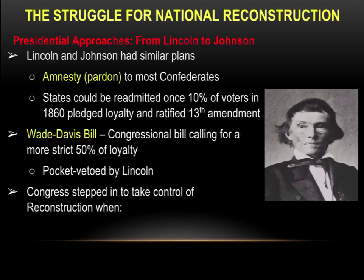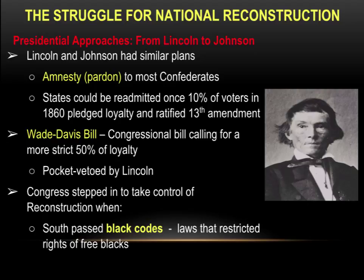Congress stepped in to take control of Reconstruction when, first, the South passed Black Codes — laws that restricted the rights of free blacks. Second, Georgia elected former Confederate Vice President Alexander Stevens to the United States Senate. Congress said no — Stevens was considered more of a firebrand than Jefferson Davis — so Congress decided to take control of Reconstruction.